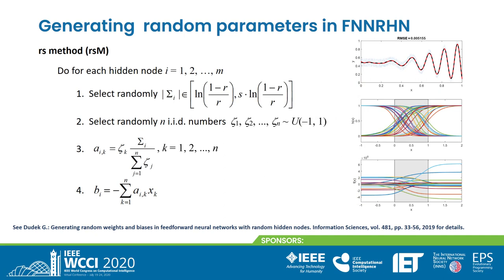The RS method, proposed recently, doesn't have these drawbacks. It first selects randomly the sum of weights from an interval depending on R and S hyperparameters. Then it calculates weights on the basis of this sum and random numbers. Finally, biases B are determined on the basis of the weights and a randomly selected point. As a result, all sigmoids are inside the input hypercube. Parameters R and S determine the slope range of the sigmoids. They are selected in cross-validation to adjust the sigmoid slopes to the target function complexity. Details can be found in this paper.